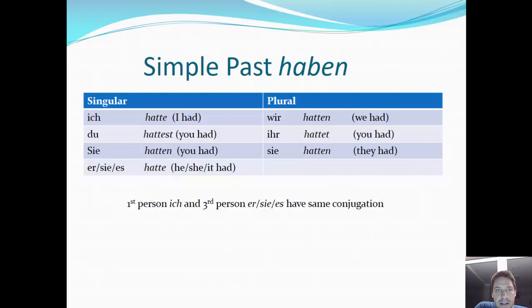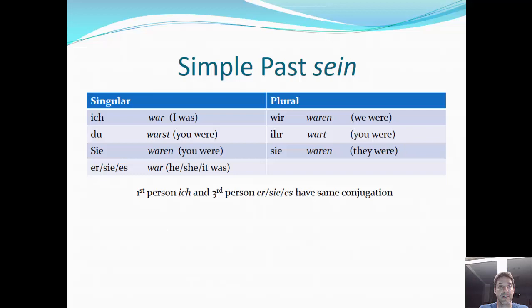Now I'll go through these tables. This is our chart on how to conjugate 'haben': ich hatte, du hattest, sie hatten, er/sie/es hatte, wir hatten, ihr hattet, und sie hatten. Note that first and third person singular are the same. Simple past of 'sein': ich war, du warst, sie waren, er/sie/es war, wir waren, ihr wart, sie waren. Again, first and third person singular are the same: 'ich war' und 'er/sie/es war.'